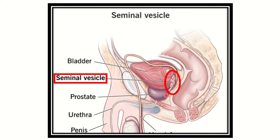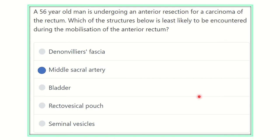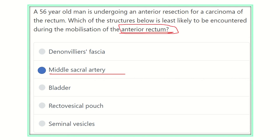In this picture we can see the rectum, and anteriorly there is the seminal vesicle, bladder, and prostate. Posteriorly is Waldeyer's fascia. So our answer: Denonvilliers' fascia, bladder, rectovesical pouch, and seminal vesicle all lie anteriorly, but the median sacral artery lies posteriorly to the rectum. Since the question asks about anterior rectum mobilization, the median sacral artery is least likely to be encountered.